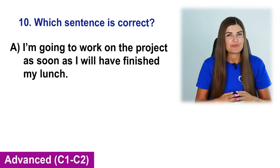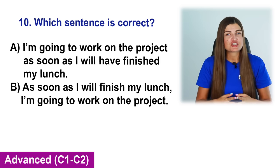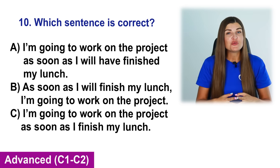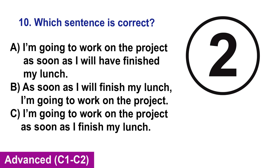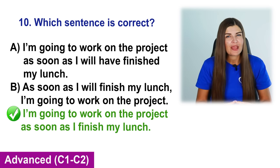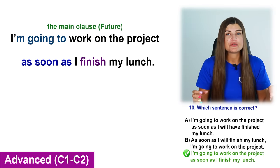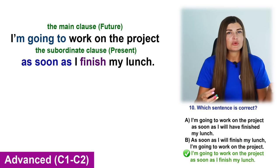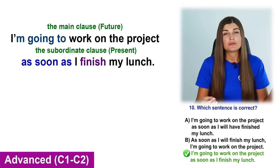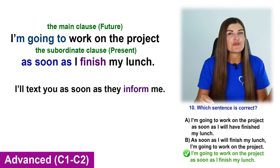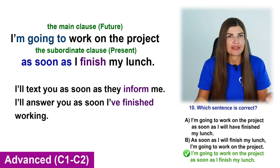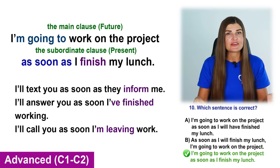Which sentence is correct? The correct sentence is C: I'm going to work on the project as soon as I finish my lunch. Here we have a time clause. In the main part we use the future tense, and in the subordinate clause we use the tenses of the present group — present simple, present continuous, or present perfect — but not the future tense. For example: I'll text you as soon as they inform me. I'll answer you as soon as I finish working. I'll call you as soon as I'm leaving work.